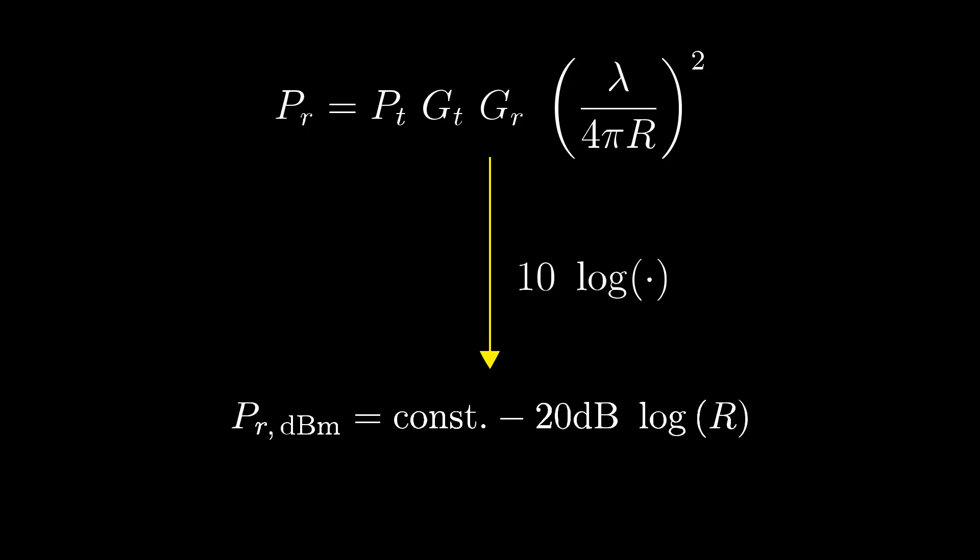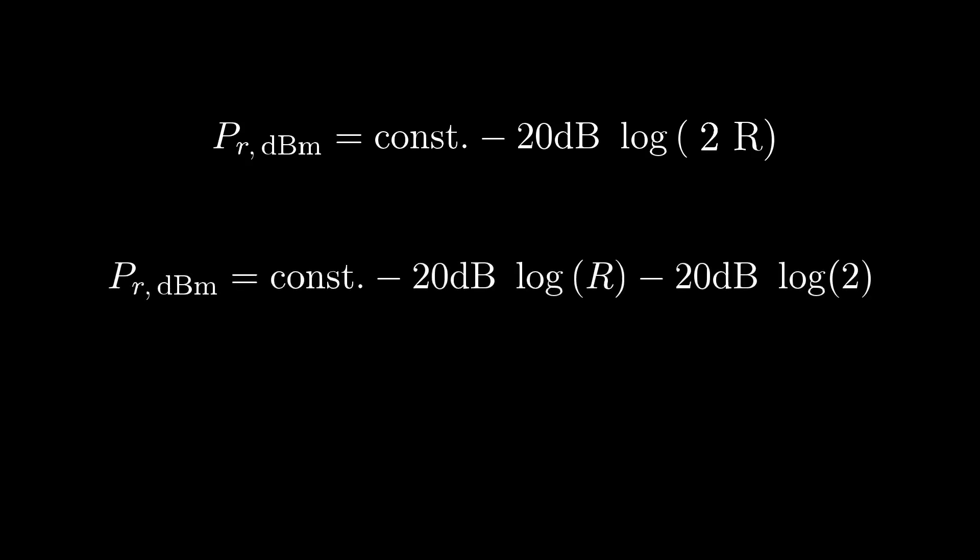So if we want to use the same setup to transmit over twice the distance, we have to double R. By logarithmic identities, we find that this only contributes to a constant summand of minus 20 dB times the log of 2, which is approximately minus 6 dB. To put it bluntly, every time we double the distance between the two antennas, we lose 6 dB of signal strength.